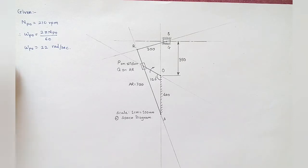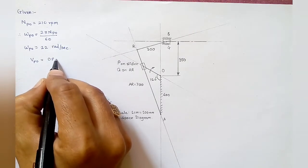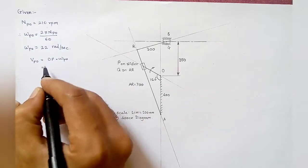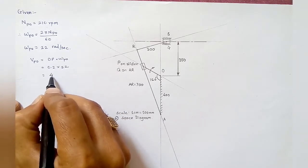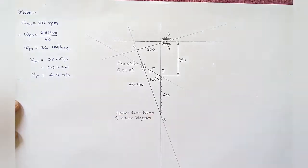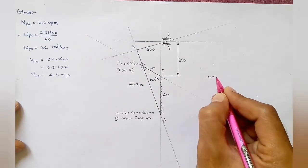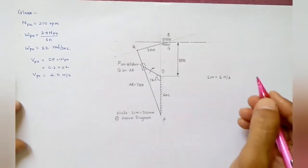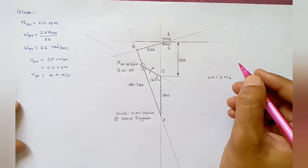Now to draw the velocity diagram, the first step is to find the linear velocity of the crank. Velocity of P = OP × ω_PO = 0.2 m × 22 rad/s = 4.4 m/s. For the velocity diagram, select a scale of 1 cm = 1 m/s, then select a reference point representing zero velocity.